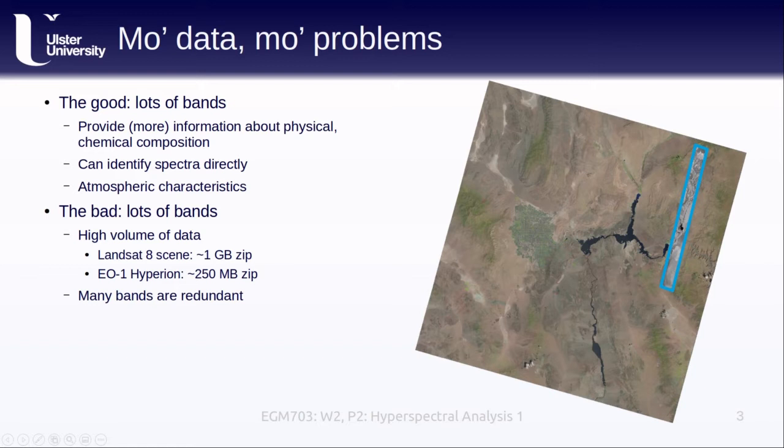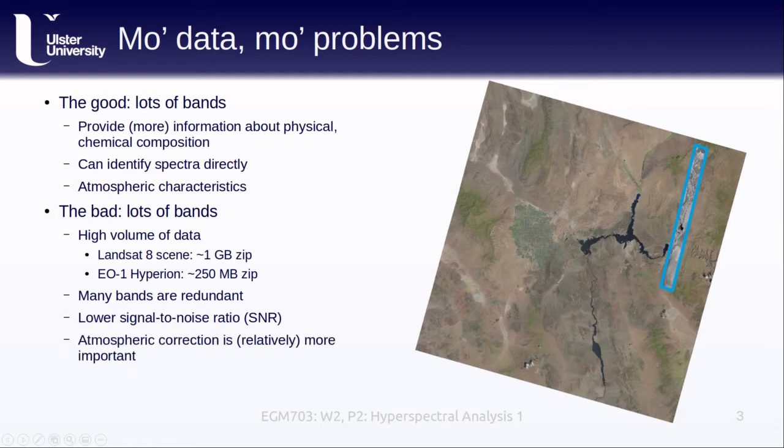Like we've seen with multispectral data, there can be a lot of redundant information in adjacent bands, meaning that we have a high volume of data that doesn't necessarily give us more information. Many of these bands also have a lower signal-to-noise, or SNR ratio, meaning that it can be more difficult to extract the information that we want, because there's more noise in the images. Because we're normally comparing these images to spectral signatures collected in the field or laboratory, atmospheric correction is also comparatively more important than it is for multispectral images.